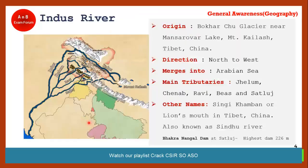The first river is the Indus river. Its origin is Mount Kailash, which is in Tibet, China. More specifically, it originates from the Bhokarchu glacier, near Mansarovar lake. It flows from north to west and ultimately meets the Arabian Sea.